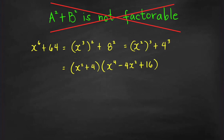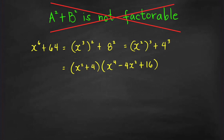Let's have some examples. Consider x raised to the 6th plus 64. This is a sum of two squares — two squares of two polynomials. Here x cubed is a polynomial and 8 is a constant polynomial. We can also write x raised to the 6th plus 64 as a sum of two cubes: it's the cube of x squared plus the cube of 4. We know that sum of two cubes is factorable. We can write it as A plus B — where A is x squared and B is 4 — times the trinomial A squared minus AB plus B squared, giving x squared plus 2 times 4x squared plus 16.